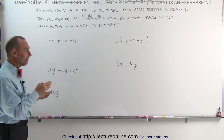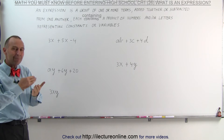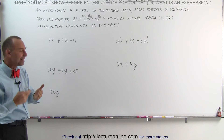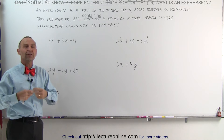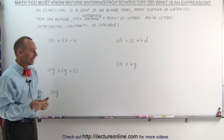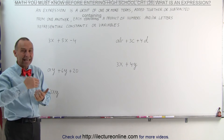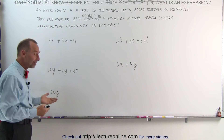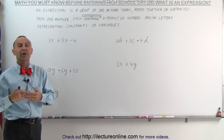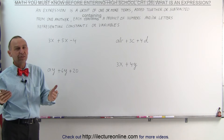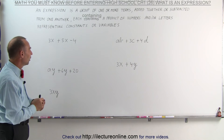Those letters represent either constants or variables. The ones that are written in the beginning of the alphabet, like a, b, c, d — that type of letter — are typically representative of constants. And letters that are at the end of the alphabet, like x, y, and z, are typically representative of variables. Not exclusively, but that's the norm.